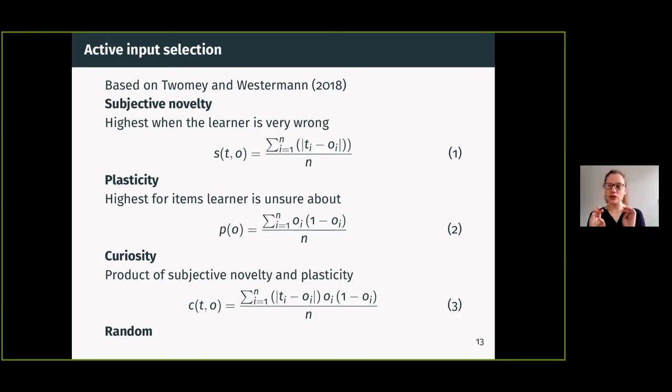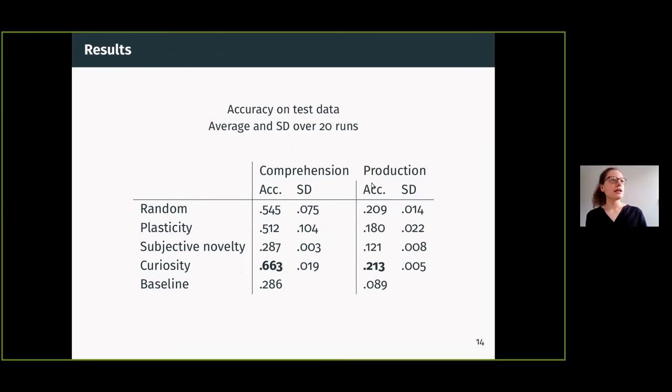Then we have curiosity, which is basically the product of the two, so it considers both these factors. And then we have another condition which is random—we just get one of the objects in the scene at random, that's the one that we get the label for.